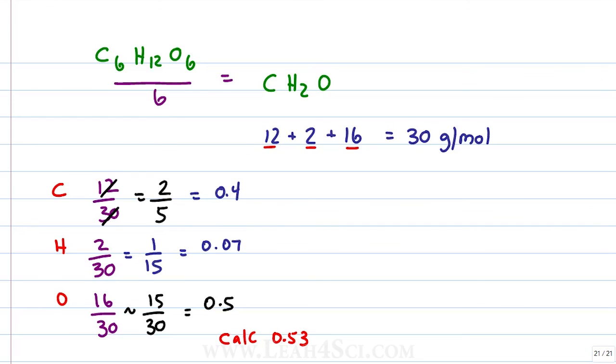But we're not done because our answers are in decimals. To find the mass percent we multiply everything by 100% or move the decimal two spaces giving me carbon at 40%, hydrogen at 7% and oxygen at 50%. When you add up the mass composition they should be equal to about 100%, I say about because we estimated and rounded but 40 and 7 is 47 and 50 is 97, 97 is close enough to 100%.